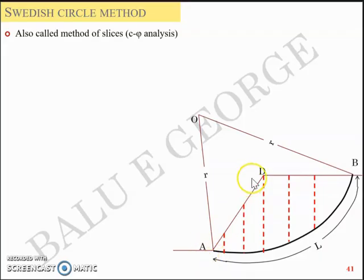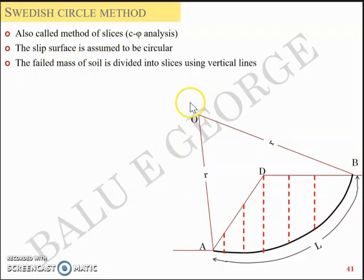Let's assume that you have a slope ADB with the slip surface AB whose length along the curve is L and AB forms a part of a circle whose radius is R and center is O.